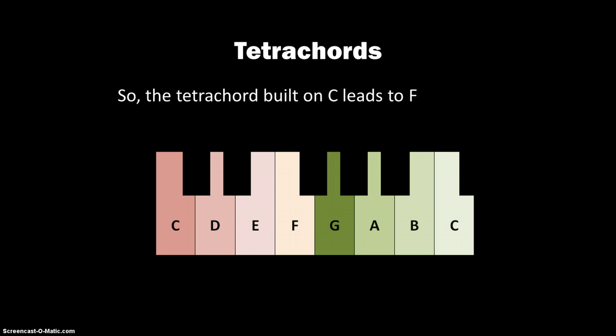Two tetrachords that we've looked at: the one starting on C leads to F, and the one starting on G leads to C. So you can see the pattern of intervals there from C to F, then G to C.